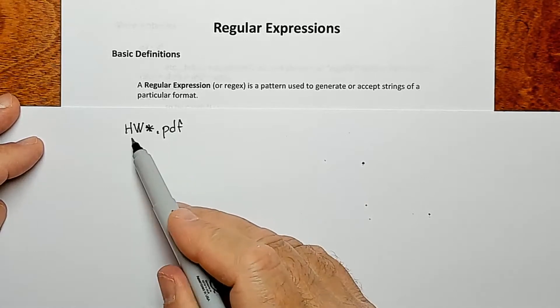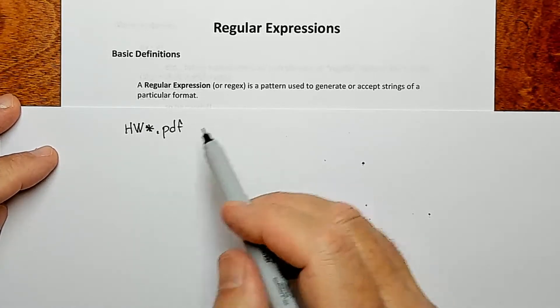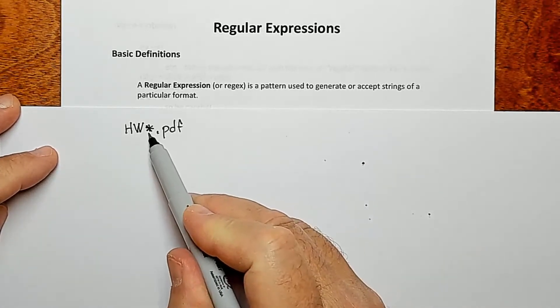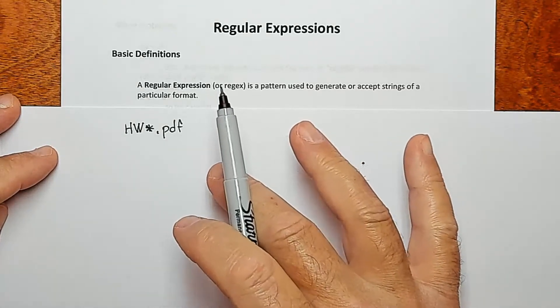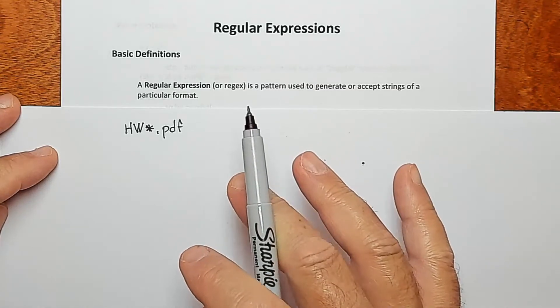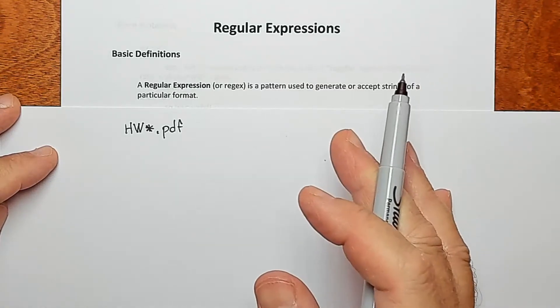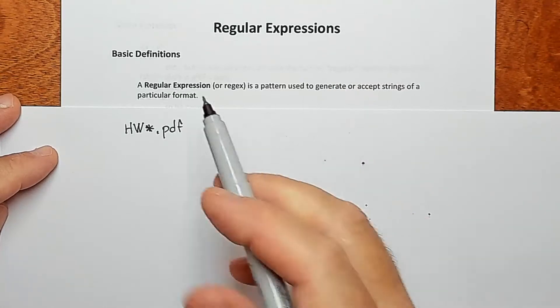It'll find all of those where the star is a wild card that matches anything. That's in this syntax, the syntax for file searches in Windows. Now we're going to use a slightly different syntax, but conceptually it's kind of the same thing.